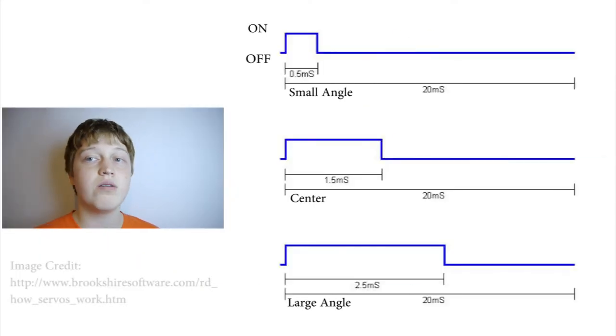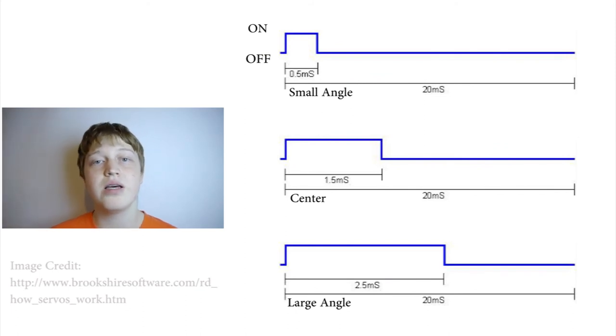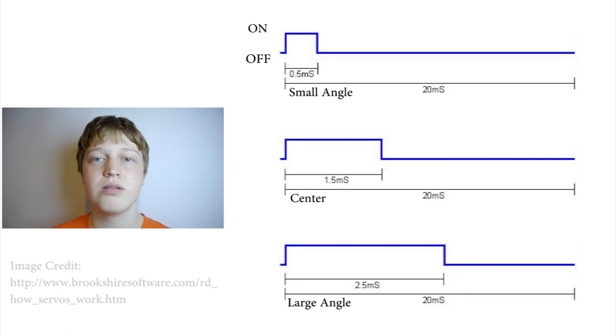If you look over here, you can see a graph showing examples of the commands you can send to a servo. In essence, PWM is telling your motor controllers what to do based off of how long your pulse width is.